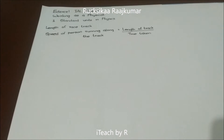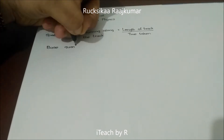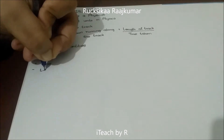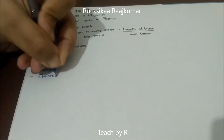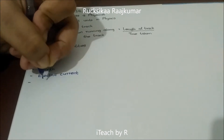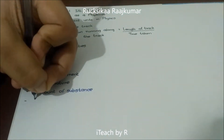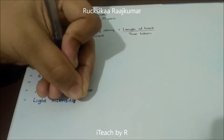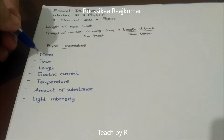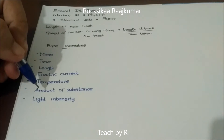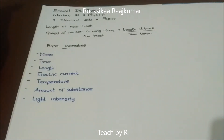Now let's list the seven base quantities, their names, and their symbols. The seven base quantities are: mass, time, length, electric current, temperature, amount of substance, and light intensity. Now let's write down their unit names and their unit symbols.